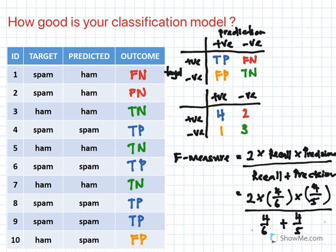I created these two videos so that you can easily understand how to find accuracy, misclassification rate, recall, precision, and F-measure. These are basic measurements you can use to evaluate how good your classification model is. In this example, we built a binary classifier for spam. Thank you very much.